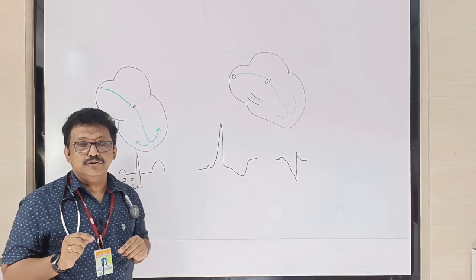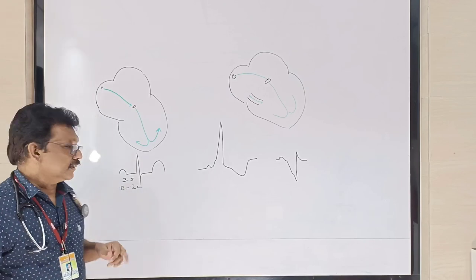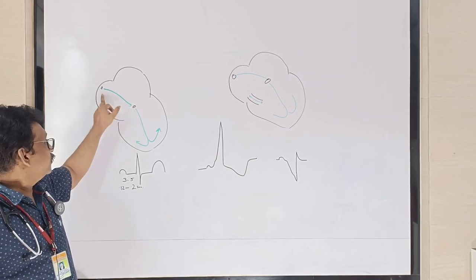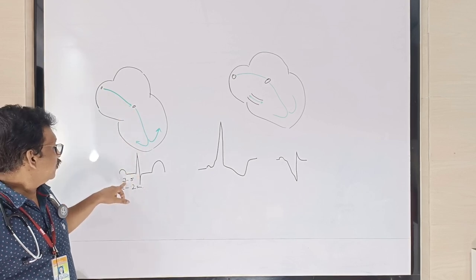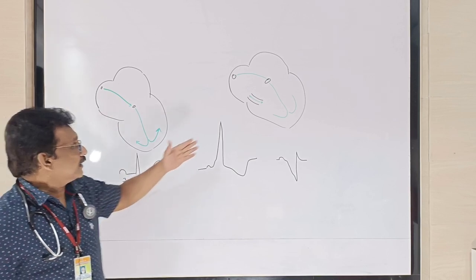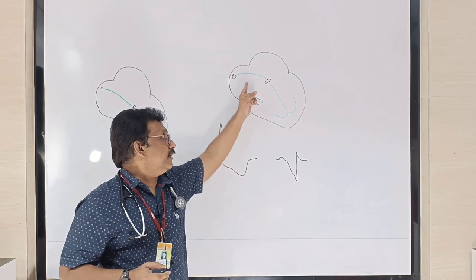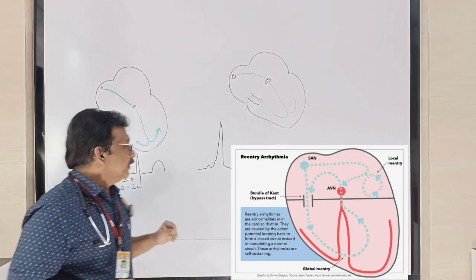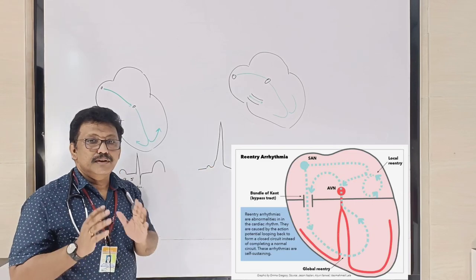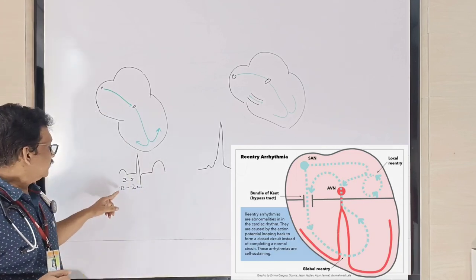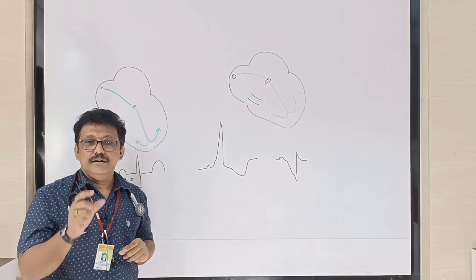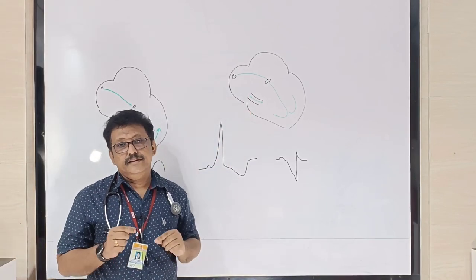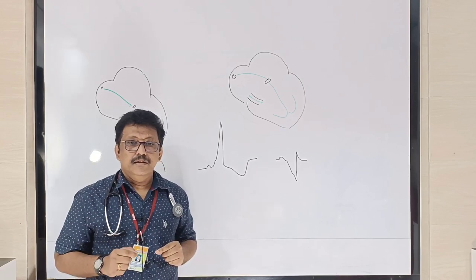If the PR interval is less than three small squares, there is a problem. Normally, current travels from the SA node to the AV node through a regular pathway, taking a minimum of three and a maximum of five small squares. But if there is an accessory pathway, it is faster than the regular pathway, so the time from SA node to AV node decreases significantly. The P-to-QRS onset becomes very short — less than three small squares or less than 0.12 seconds — indicating an accessory pathway. Classically this is seen in Wolff-Parkinson-White syndrome or Lown-Ganong-Levine syndrome.